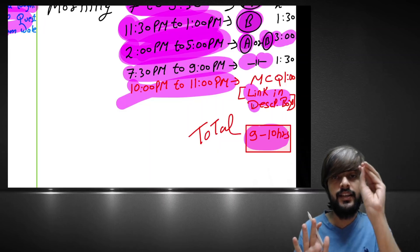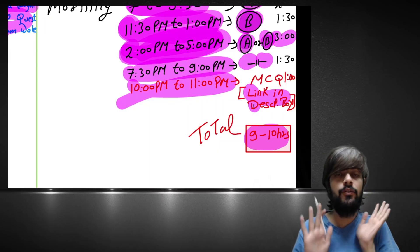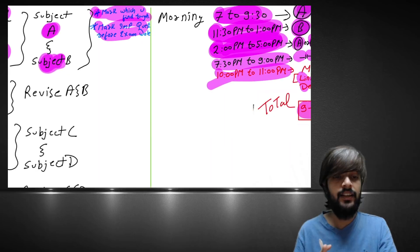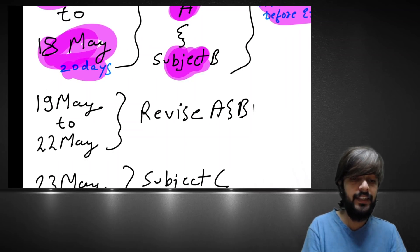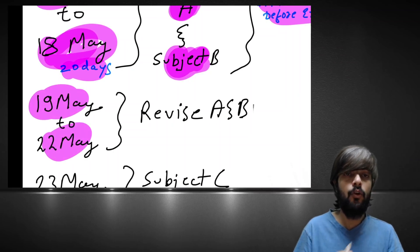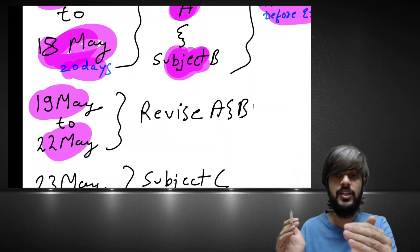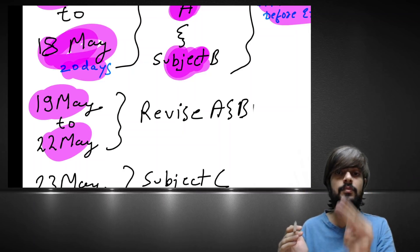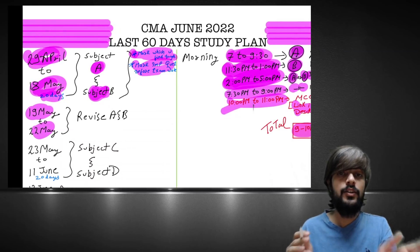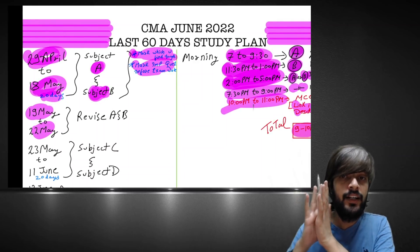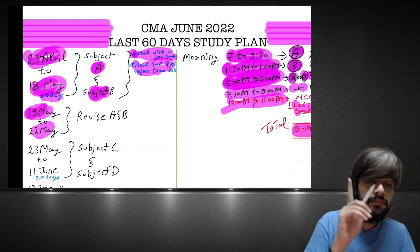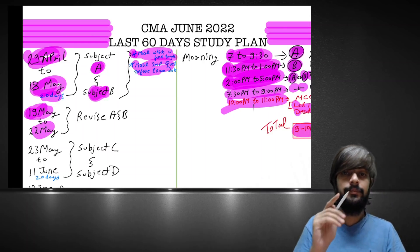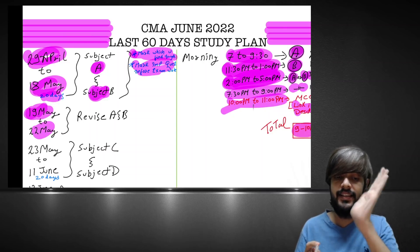Then from 18th May, you will complete the two subjects. Then from 19th May to 22 May, 4 days, you revise two subjects. That is subject A for 2 days, subject B for 2 days. So in 20 days, you have studied 200 hours, you have done everything, whatever the important things were, their important questions, important numericals, you revise it on 19th, 20th, one subject, 21st, 22nd, 2nd subject.